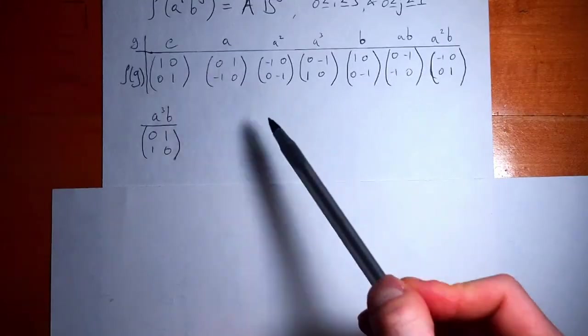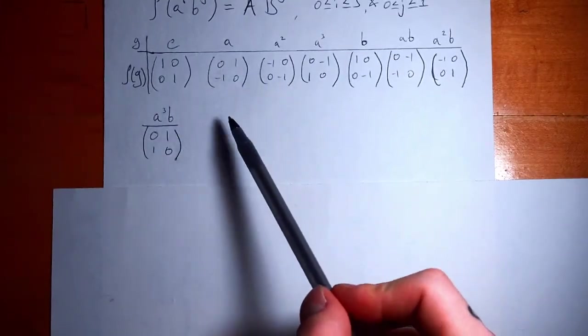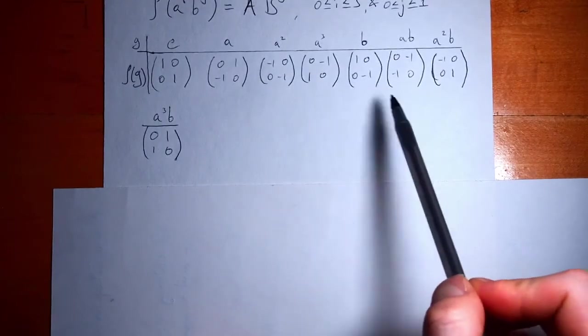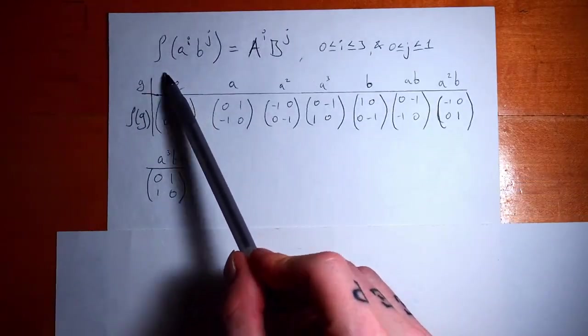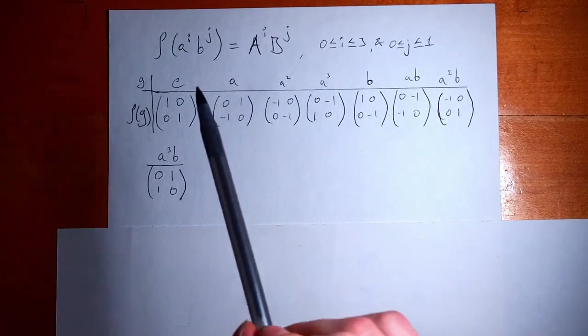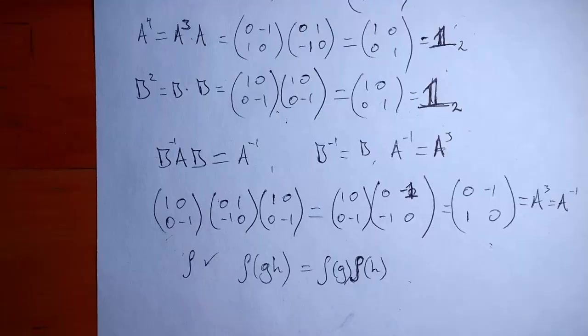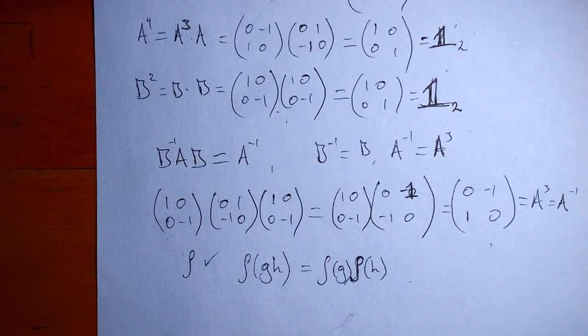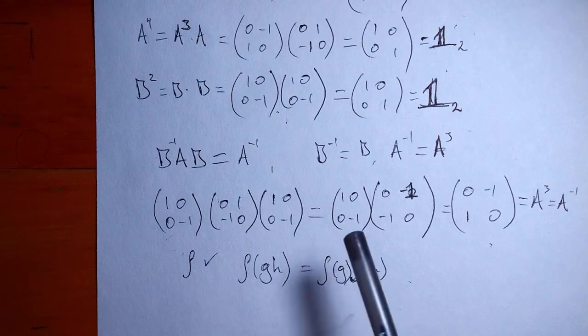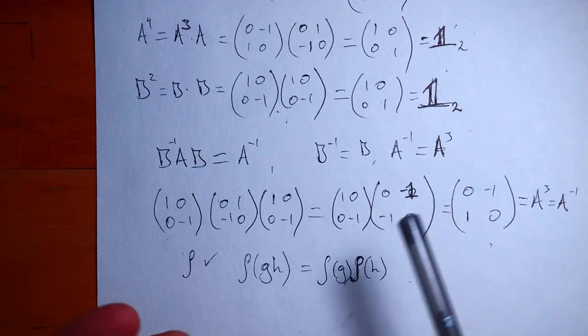And this is a homomorphism that maps from G to GL(2,R). This full extension of rho, this map here, is our first example of a representation. So we have that it's a homomorphism. We have a mapping from G to GL(2,R). So we have a degree 2 homomorphism over the field R, real numbers.